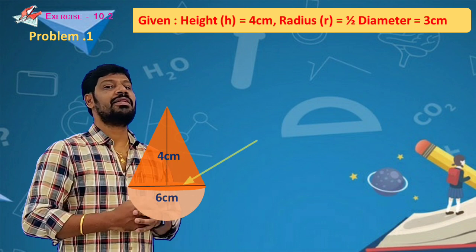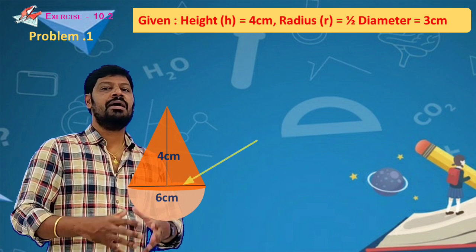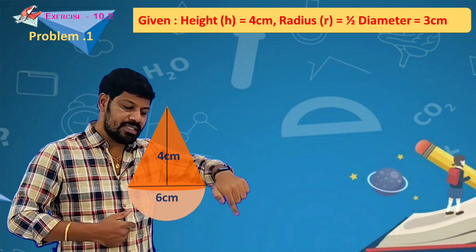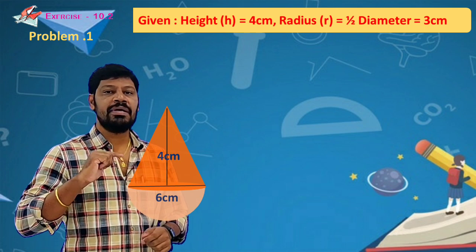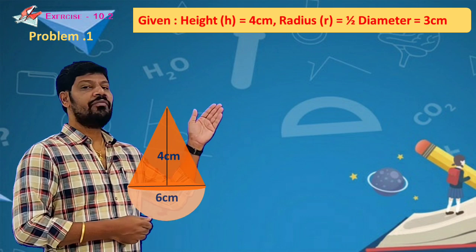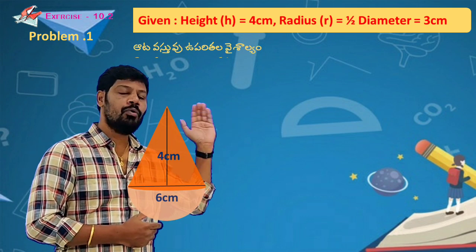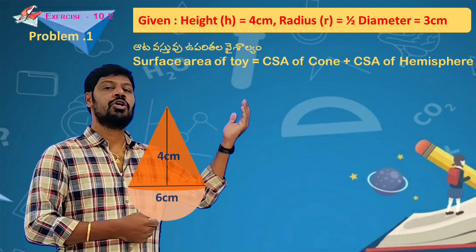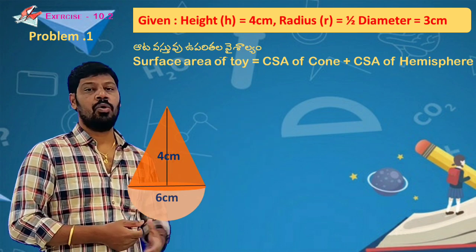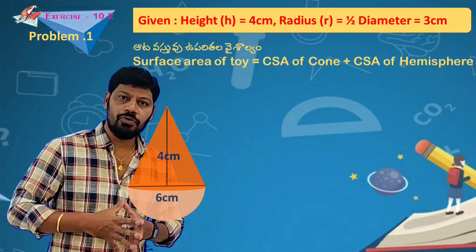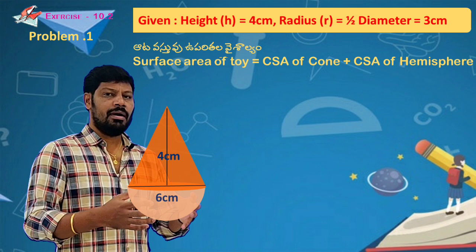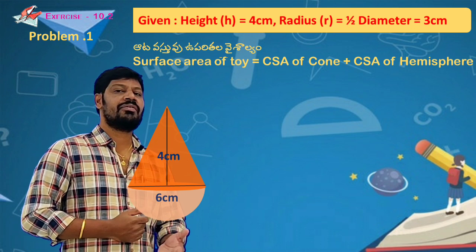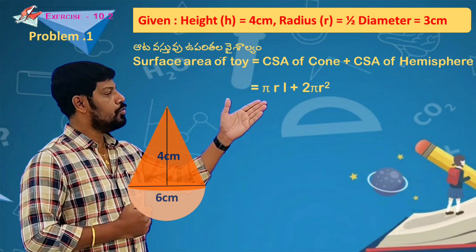You have a circular shape, a curved surface area of cone and curved surface area of hemisphere. The surface area of the toy is CSA of cone plus CSA of hemisphere. I already know the formulas. The cone CSA is πrl. The hemisphere is 2πr².